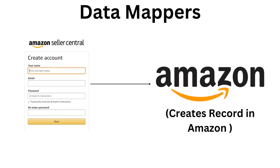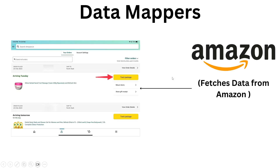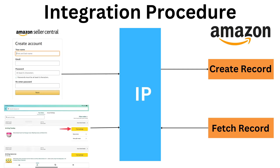In both of these examples — creating a record and fetching data — I had to make two separate requests to Amazon's database: one to create and one to fetch. If there are multiple such requests, it creates too much load on Amazon's web services and database. To fix this, instead of doing two separate requests, we can send all requests together in one go — fetching and creating data at the same time. To do that, we use Integration Procedures.